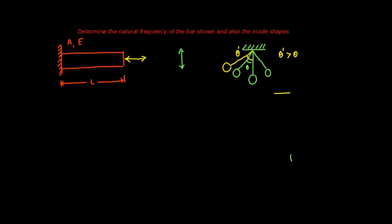Another example is the spring-mass system: stretch the spring a distance delta and release it. It oscillates up and down at a particular natural frequency. The natural frequency changes if you change the length of the string — a shorter string means faster oscillation, higher natural frequency. It also depends on acceleration due to gravity. The natural frequency is a property of both the material and the geometry.